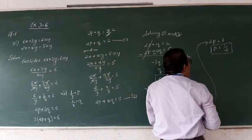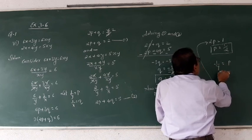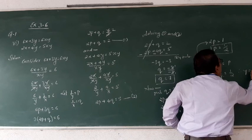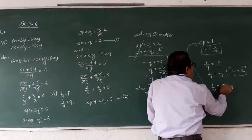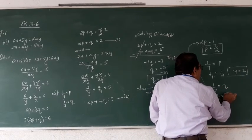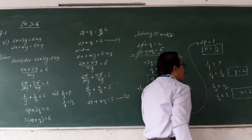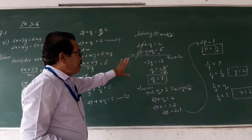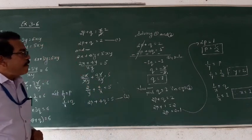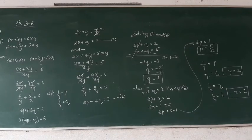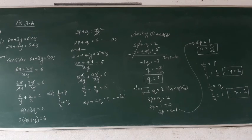Now let us find the values of x and y. 1 by y equals to p equals to 1 by 2, therefore y equals to 2. Then 1 by x equals to q equals to 1, therefore x equals to 1.